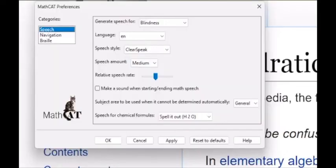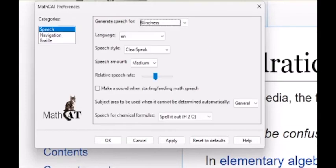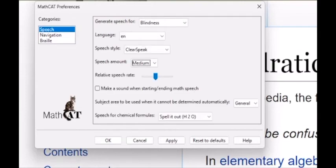In the settings menu numerous options in MathCat can be used to control the speech navigation and braille. For example a person may choose to have the speech slow down when speaking math expressions or they can select which braille notation to use.